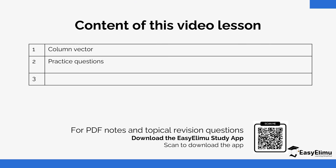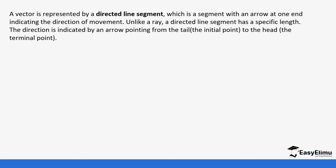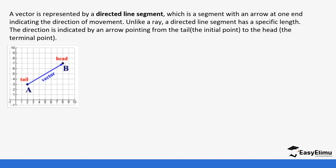We are going to look at what column vectors are and then also present them graphically and see how they are represented. A vector is represented by a directed line segment, which is a segment with an arrow at one end indicating the direction of movement. Remember, a vector has direction and magnitude — direction is shown by the presence of an arrow, and magnitude is the size, shown by a certain length.